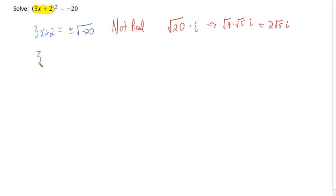So we have 3x plus 2 equals plus or minus 2 root 5 i.